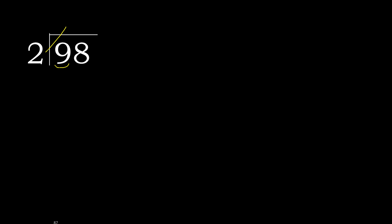2 multiplied by 5 is 10 — 10 is greater, so that doesn't work. 2 multiplied by 4 is 8 — it is not greater. So 9 minus 8 is 1.